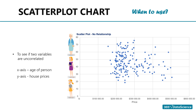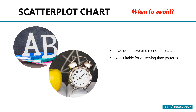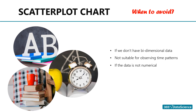We can't use scatter plots when we don't have bi-dimensional data. In our example, we need information about both house prices and house size to create a scatter plot — it requires at least two dimensions. In addition, scatter plots are not suitable if we are interested in observing time patterns. Finally, a scatter plot is used with numerical data. If we have categories such as three divisions or five products, a scatter plot would not reveal much.